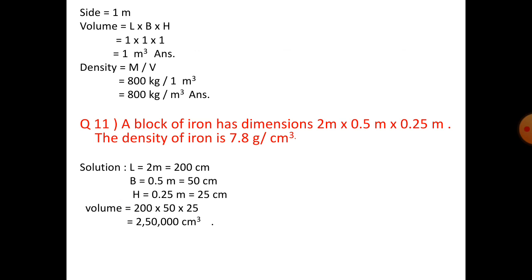Question 11: a block of iron has dimensions 2 meter into 0.5 meter into 0.25 meter, and the density of iron is 7.8 grams per cubic centimeter. We need to find the mass of the block. Please refer your book as the question is not written here — we need to find out the mass of the block.